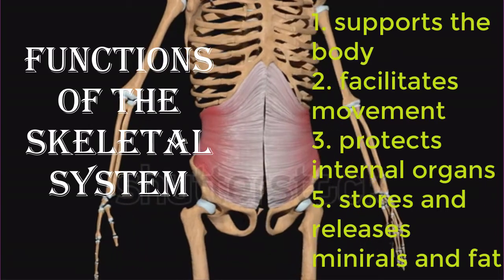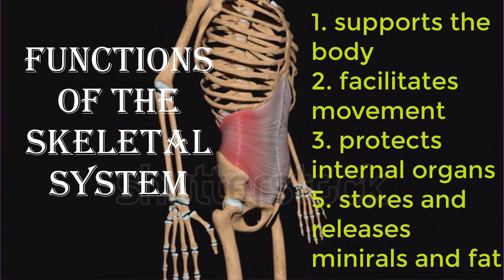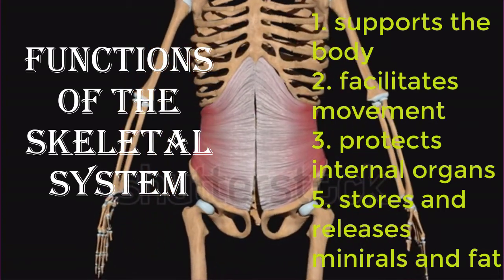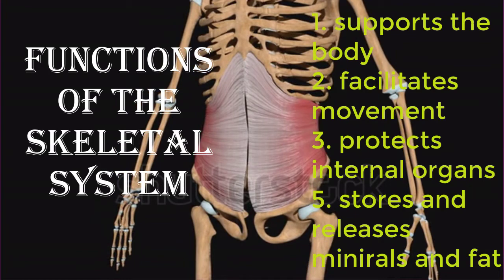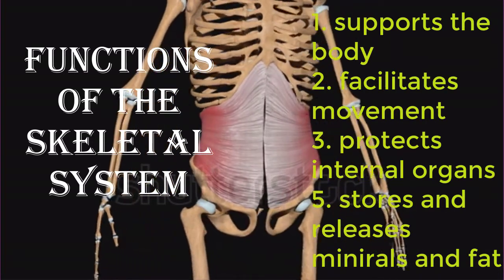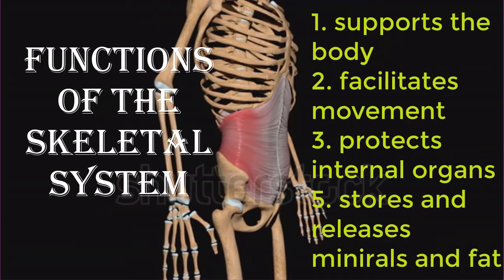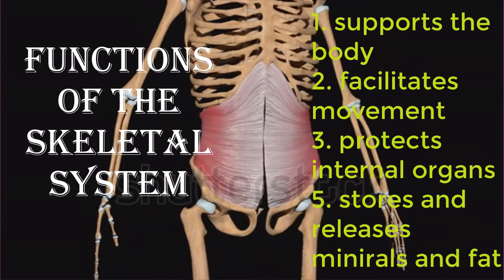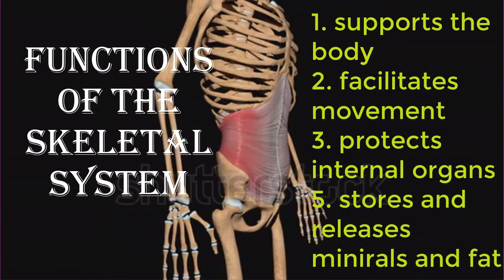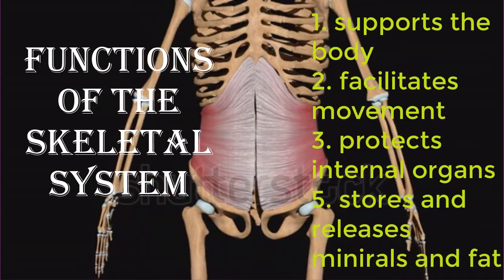Without the skeletal system, you would be a limp mass of organs, muscles, and skin. Bones also facilitate movement by serving as points of attachment for your muscles. While some bones only serve as support for the muscles, others transmit the forces produced when your muscles contract. From a mechanical point of view, bones act as levers and joints serve as fulcrums.